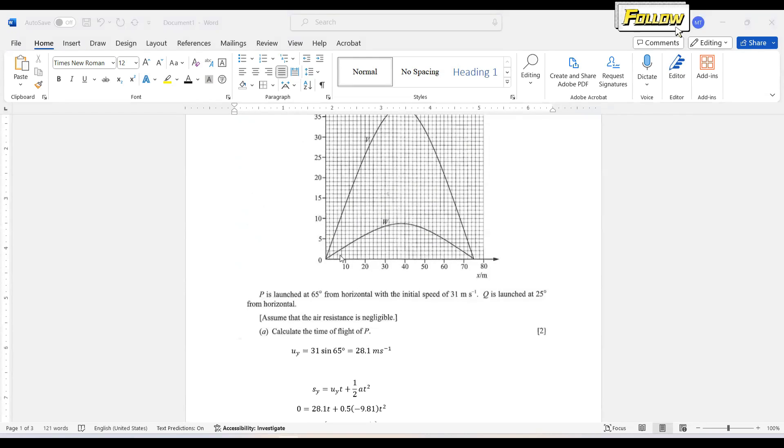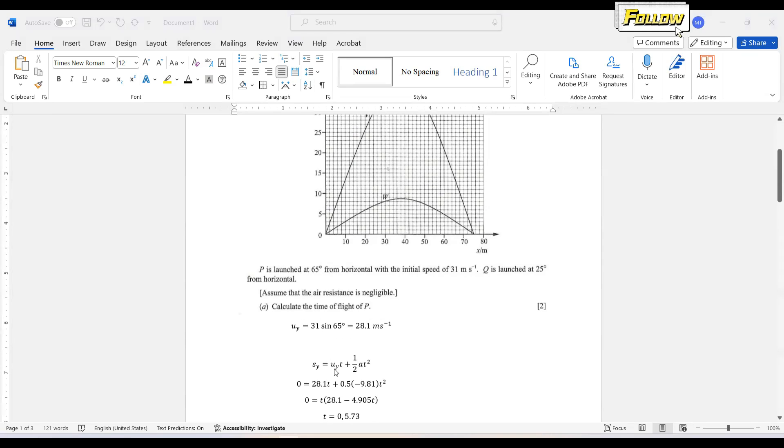So the time of flight from zero to ground, we can just apply s equals zero to obtain the time. So just put in the vertical velocity and also the acceleration as negative 9.81 meters per second squared. Since we take the upward direction as positive.